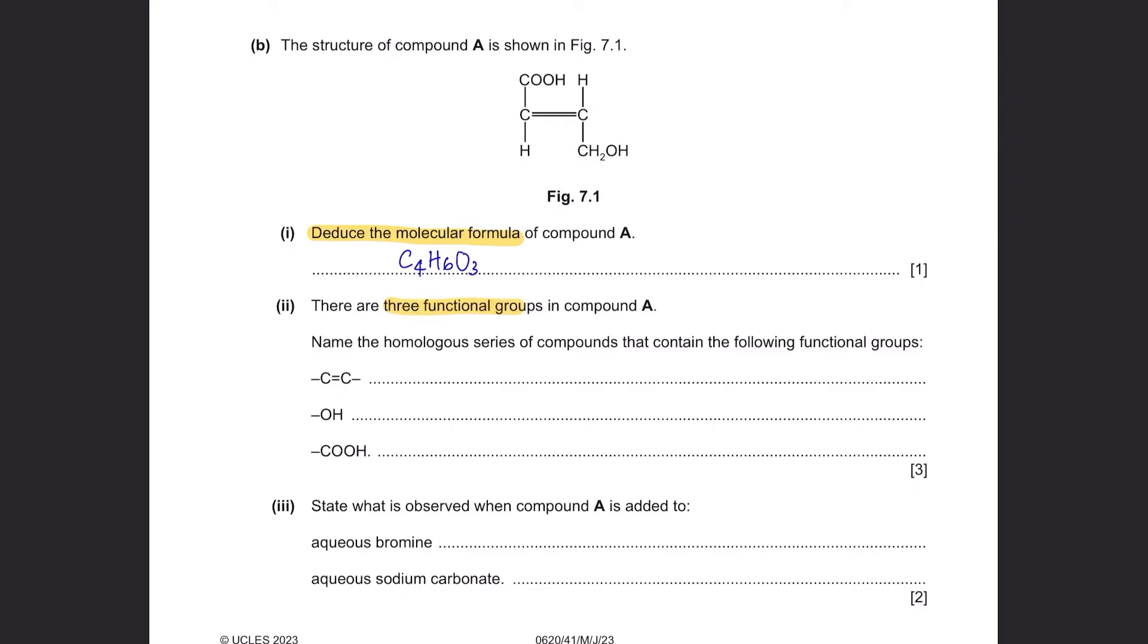Part 2. There are 3 functional groups in compound A. Name the homologous series of compounds that contain the following functional groups. Double bond of carbon would be alkene, OH is alcohol and COOH is carboxylic acid.